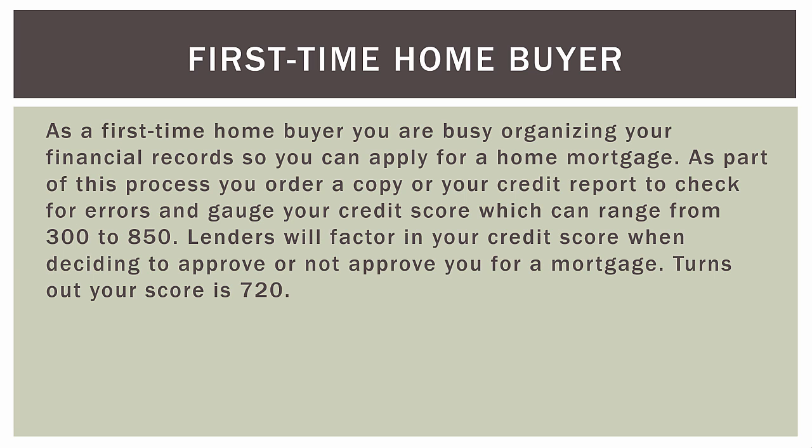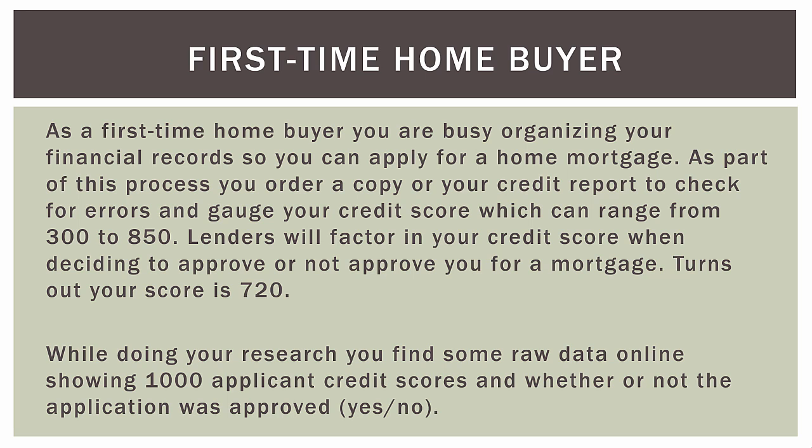We'll call it 'first time home buyer.' As a first time home buyer, you are busy organizing your financial records so you can apply for a home mortgage. As part of this process, you order a copy of your credit report to check for errors and gauge your credit score, which can range here in the US from 300 to 850. Lenders will factor in your credit score when deciding to approve or not approve you for a mortgage — along with other things like your income and how long you've been at your job. It turns out your credit score is 720. While doing your research, you find a data set online with 1,000 applicant credit scores and whether or not the application was approved — yes or no — for the home mortgage.